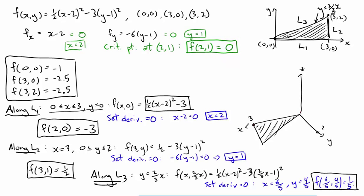So when you compare our list of numbers: 0, minus 1, minus 2.5, and minus 2.5, minus 3, 1 half, and 1 fifth. The absolute maximum is 1 half. That occurs at 3, 1. And the absolute minimum is minus 3. That occurs at 2, 0.